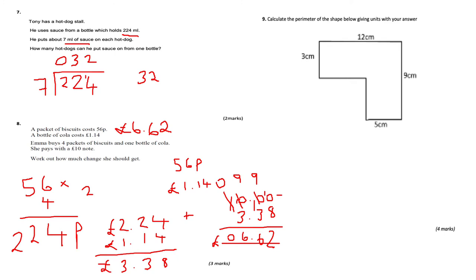Question 9: calculate the perimeter of the shape, giving units. Perimeter is the distance around the shape. First, work out the missing lengths: if one side is 3 and the total is 9, then the missing part is 6, because 3 plus 6 is 9. The other missing length is 7, because 5 plus 7 must equal 12.